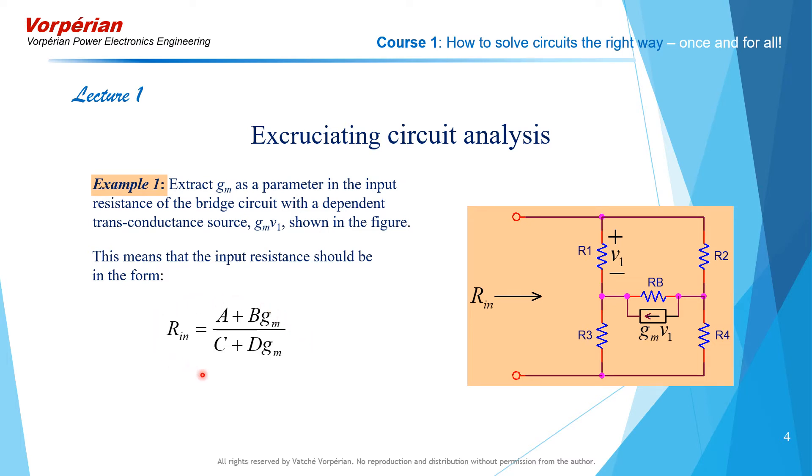the expression of the input resistance Rin in this form, where gm stands out as a linear term in the numerator all by itself and as a linear term in the denominator all by itself. A, B, C, and D are constants that do not contain gm.